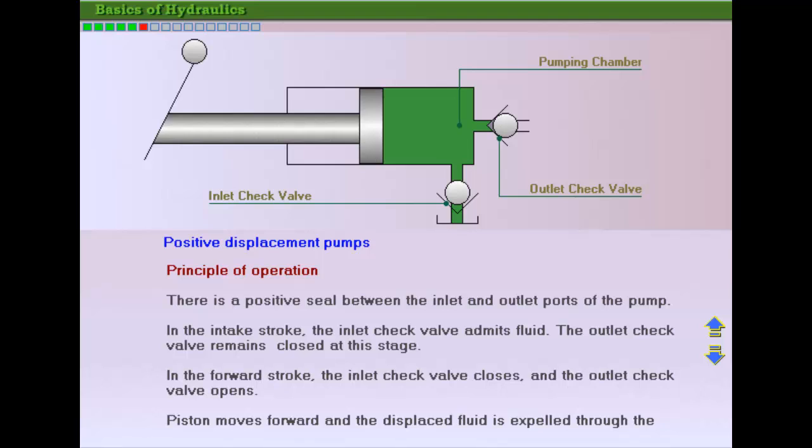On the forward stroke, the inlet check valve is forced closed, sealing off the inlet from leakage back to the reservoir. The piston moves forward and pressure is created by resistance to flow as the outlet check valve opens and the pump's displacement of fluid is pushed out to the system.